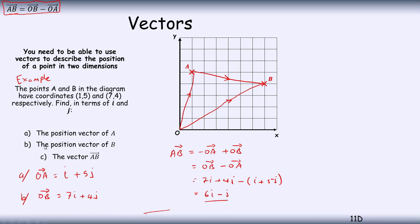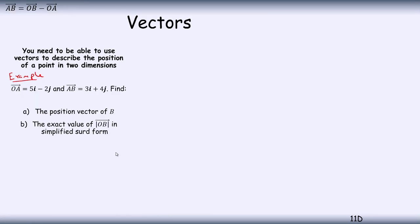So I think you can make some notes, and then we'll look at another example. So hit pause when you're ready to look at the next example, hit play again. Okay, Example 2: OA given by 5i minus 2j, and then they've given us AB, 3i plus 4j. Find the position vector of B.